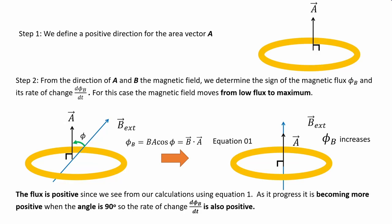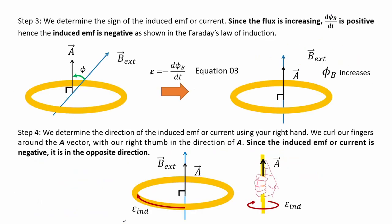Step 1: we define a positive direction for the area vector A as shown in the figure. Step 2: from the directions of A and B we determine the sign of the magnetic flux and its rate of change. For this case the magnetic field moves from low flux to maximum — the flux is positive and as it progresses it becomes more positive at 90 degrees, so the rate of change is also positive. Step 3: since the flux is increasing, the rate of flux is positive hence the induced EMF is negative per Faraday's law. Step 4: using the right hand rule we curl our fingers around A with our right thumb in the direction of A; since the induced EMF is negative it is in the opposite direction.